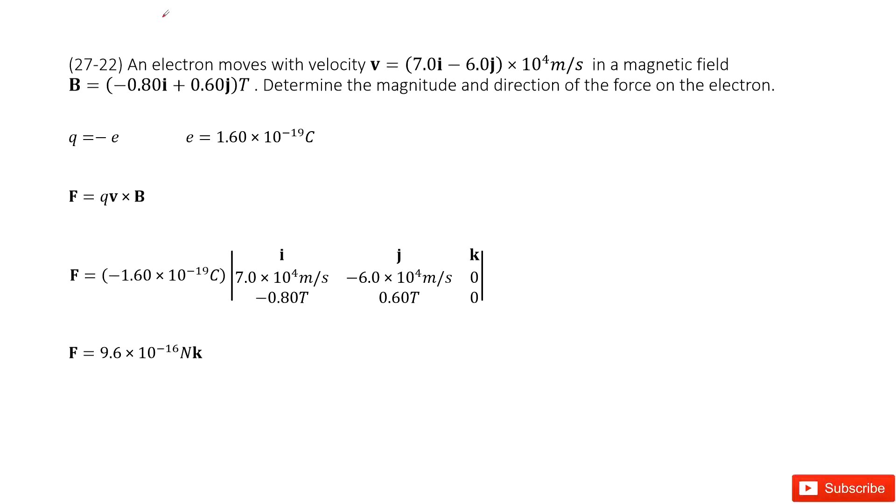So there we have an electron moving with the velocity in a vector format in the magnetic field. This is also vector format. We need to determine the magnitude and direction for the Lorentz force on the electron.